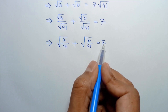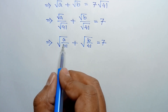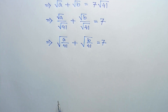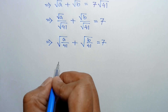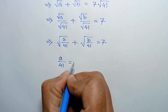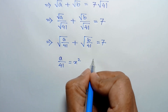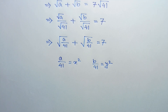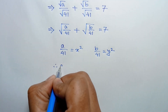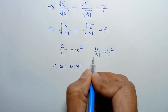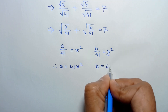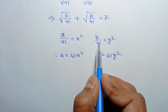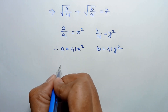Since the right side is an integer, the left side must also be an integer. So a over 41 must be a perfect square and b over 41 must also be a perfect square. Let a over 41 equal x squared and b over 41 equal y squared, where x and y are integers. Therefore a equals 41x squared and b equals 41y squared.